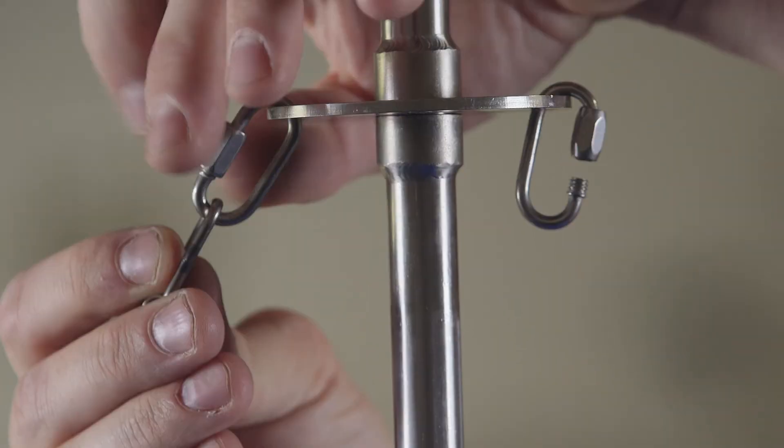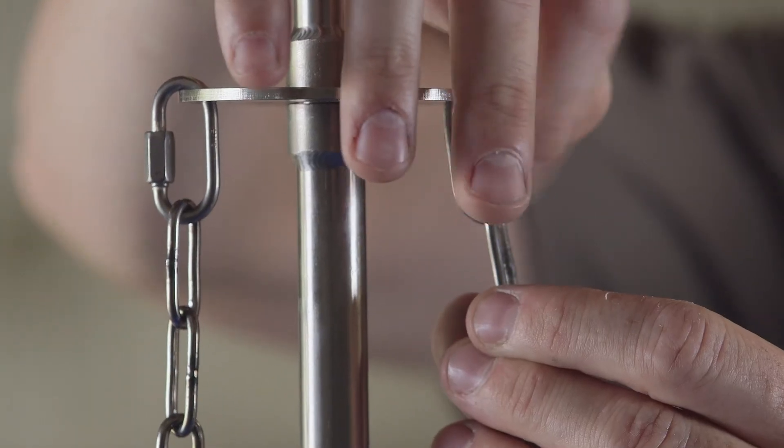Connect the limit chains to the threaded connectors and close the jaw of the threaded connector.